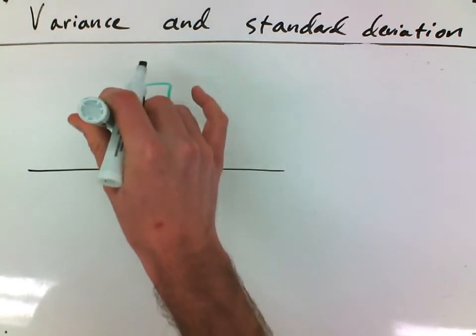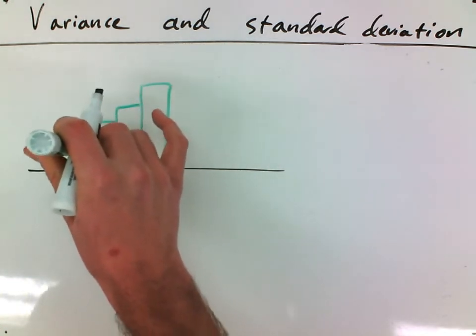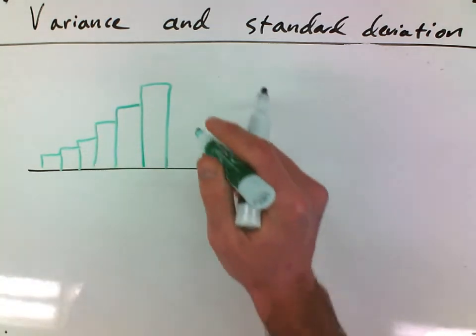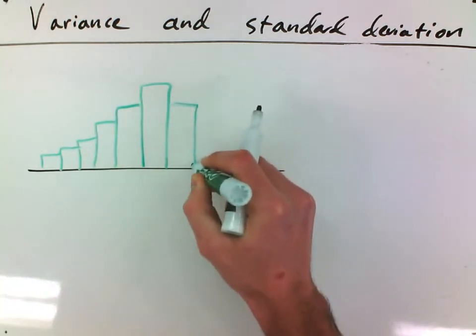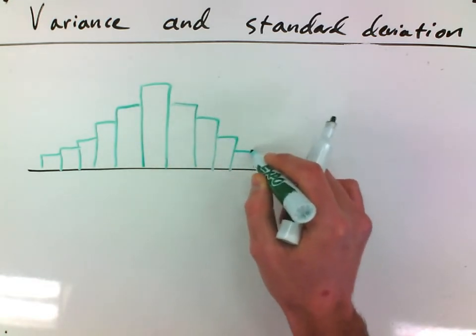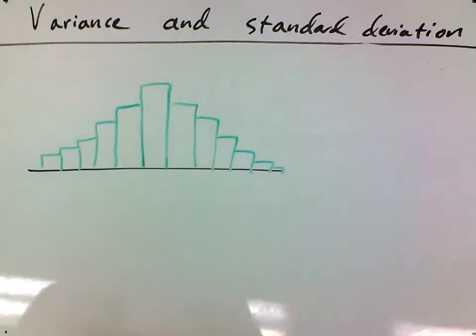And you get some people that are below average, sure, you always will. But as you get further and further away from average, there's less and less people like that. And same thing, there's quite a few people that are a little bit smarter than average, but as you get further away, the true geniuses, they get less and less and less.